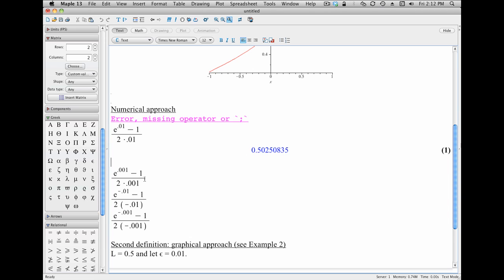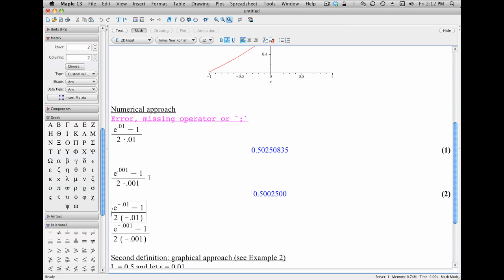How about if we plug in something even closer to 0, 0.001? Then we get out something even closer to 0.5.